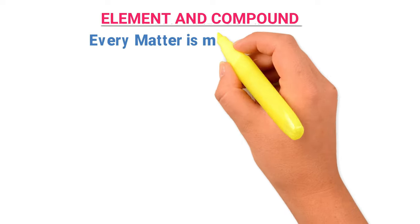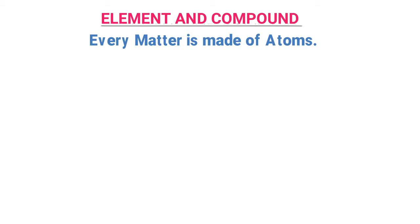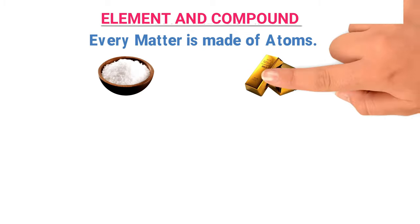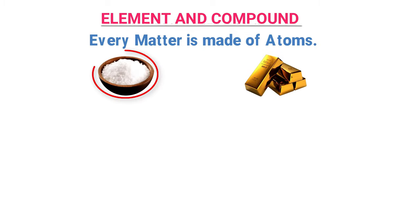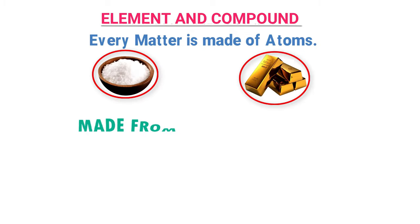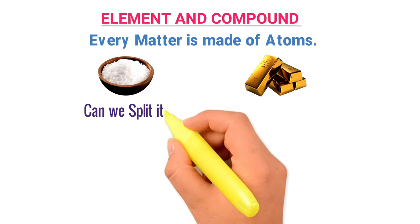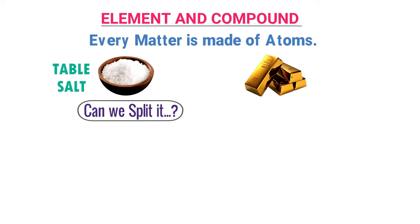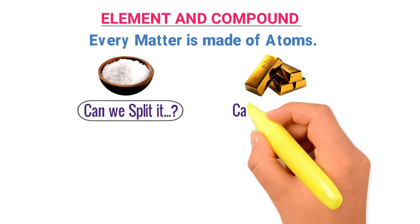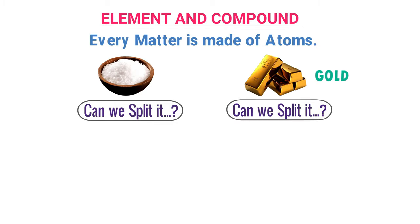We have learned in the previous lecture that every matter is made from atoms. Now let me give you two examples. Consider table salt and gold. We know that both are made from millions of atoms. Can we split table salt into two or more simpler atoms? Also, can we split gold into two or more simpler atoms?